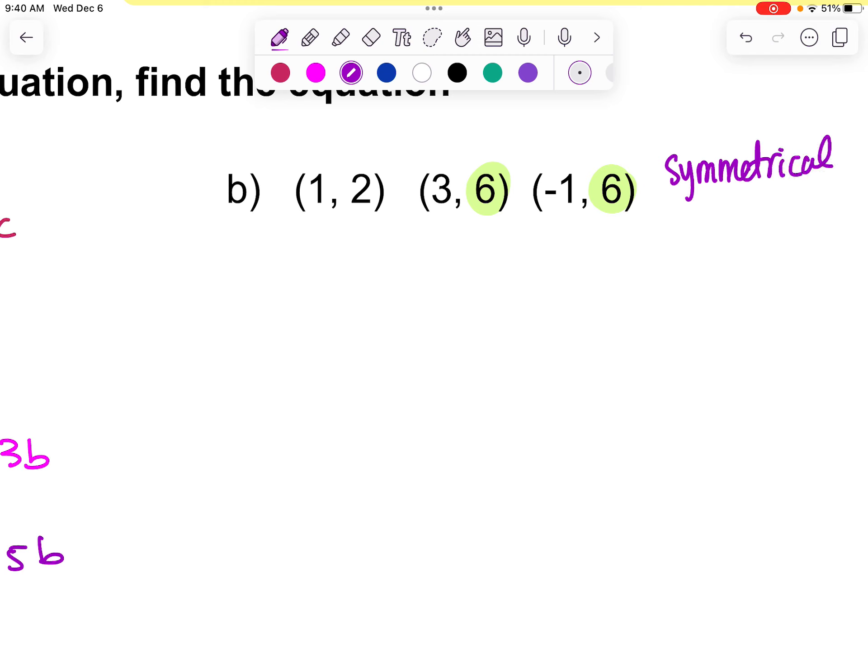We know that our parabolas are symmetrical. And because they're symmetrical, if we know two points with the same y, we can essentially graphically figure out where the vertex is located. So if we were to go ahead and sketch this out, we have points at negative 1, 6, and 3, 6. And like we talked about a little bit ago, we said that that axis of symmetry is going to be right in the middle of any two points on the graph.